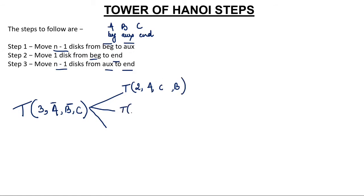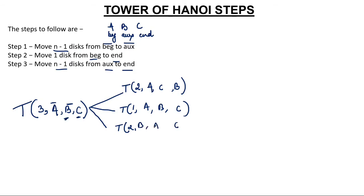Each of these sub-calls will again break into three parts using the same formula. You have to keep in mind which pole is beginning, which is auxiliary, and which is end for each sub-call. Using the same recursive formula, we break down each call until we reach base cases.